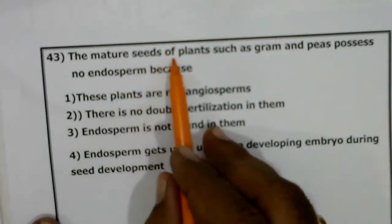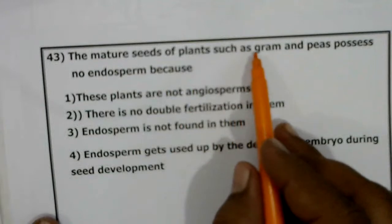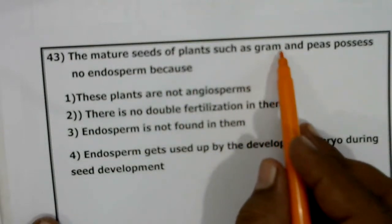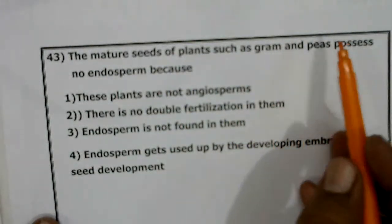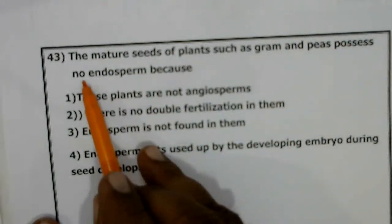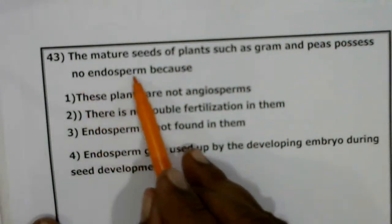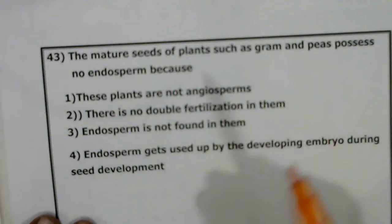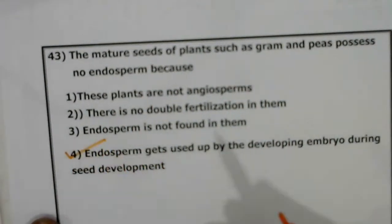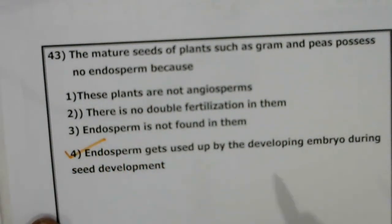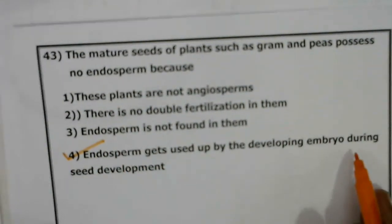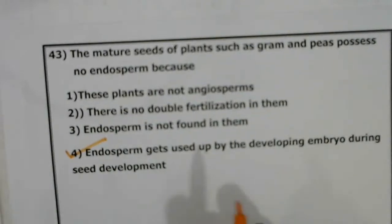Mature seeds of plants such as gram and peas possess no endosperm because the endosperm is used up by the developing embryo during seed development.